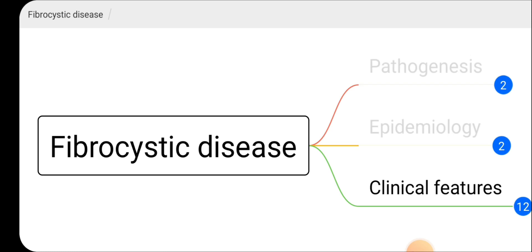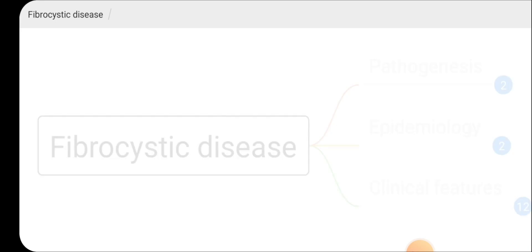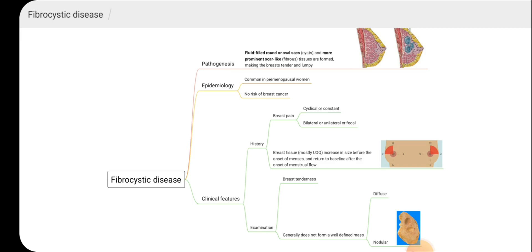In this video we discussed the pathogenesis, epidemiology, and clinical features of fibrocystic disease. There are cysts and fibrous tissues within the breast making it more tender and lumpy. It is more common in pre-menopausal women and has no risk of breast cancer. Patients may present with breast pain — cyclical or constant — bilaterally, unilaterally, or focally, most commonly involving the upper outer quadrant. On examination there can be breast tenderness and diffuse changes with nodularity.